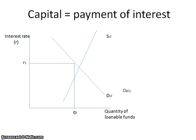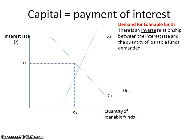The loanable funds theory of interest describes how the interest rate is determined by the demand and supply of loanable funds. The intersection of the demand for and supply of loanable funds determines the equilibrium interest rate and the quantity of funds loaned. Notice here that interest rate is on the vertical axis and it's shown with an R. The demand for loanable funds typically comes from businesses for investment in capital goods. There is an inverse relationship between the interest rate and the quantity of loanable funds demanded, meaning that when the interest rate goes down, the quantity of loanable funds demanded will increase because it becomes cheaper to take out a loan.